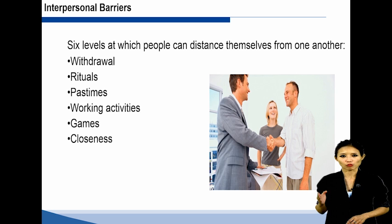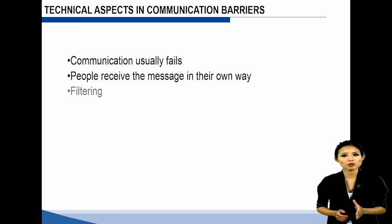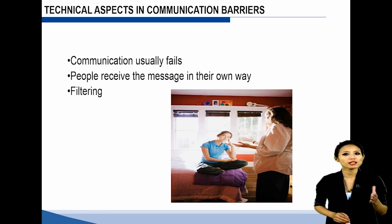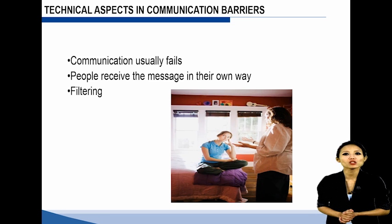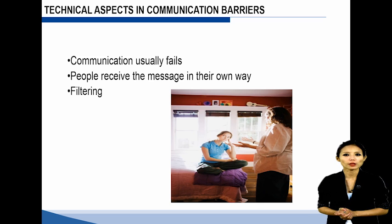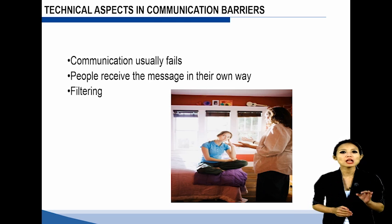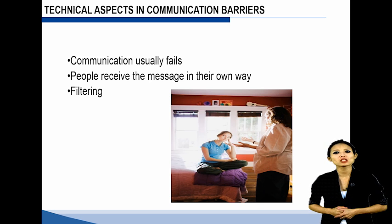Working on improving our communication: communication is a broad activity. We have to change our thoughts, feelings, and physical connection so we can break down barriers and build relationships that really work. Let us now talk about technical aspects in communication barriers as narrated by Murphy's laws on communication. The basics of this law are: communication usually fails except by chance; the possibility of success in the flow of communication is rare. People receive the message in their own way. If the message can be understood in different ways, it will be understood in just the way that does the most harm. Filtering refers to the sender manipulating information so that the receiver will see it more favorably. The more vertical levels in an organizational hierarchy, the more opportunities there are for filtering.